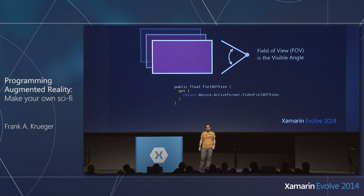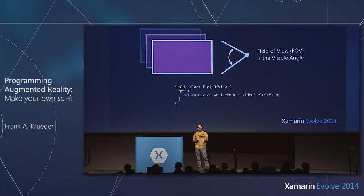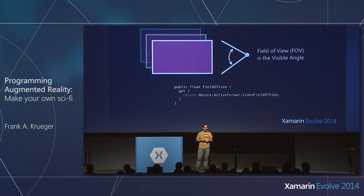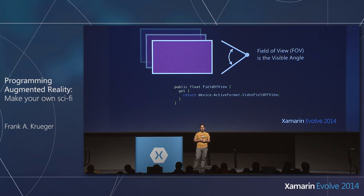I want to return to field of view for a moment — it's a very important piece of data. I spent a whole day trying to figure out the field of view on the camera, cutting out cardboard cutouts and moving my camera to different positions. It turns out there's just an API for that and I'm an idiot. There's a device active format video field of view property. I'll get back to field of view soon.